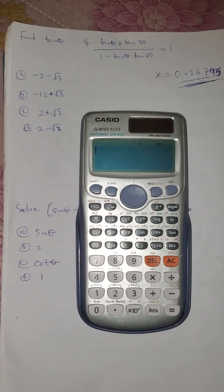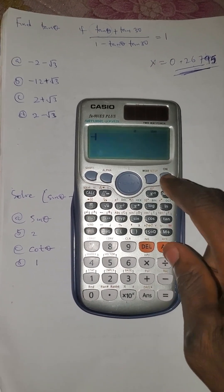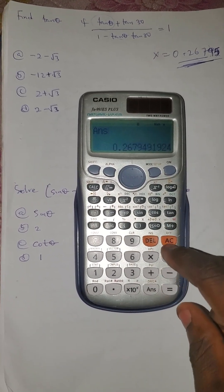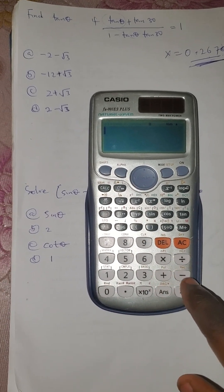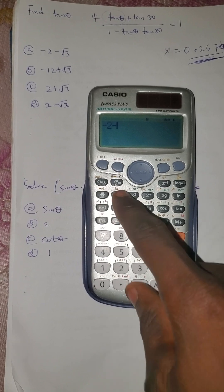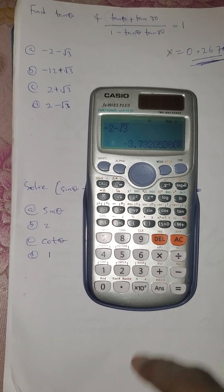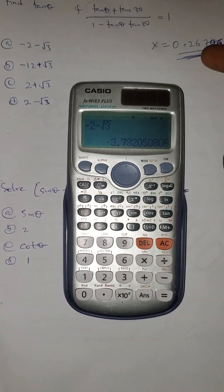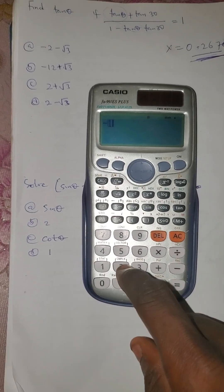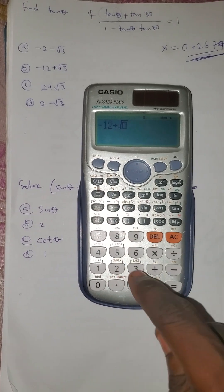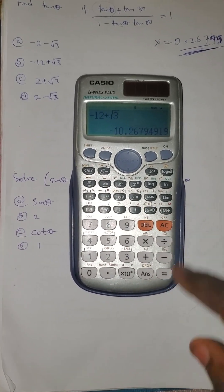Let's go for the first option: minus 2 minus root 3. Press equals to express in decimal - you can see it's not the same thing, so it's not the correct answer. Press AC. We have minus 12 plus root 3, express in decimal - not the same thing.